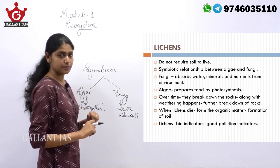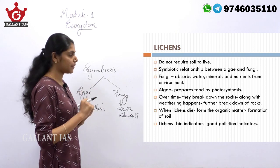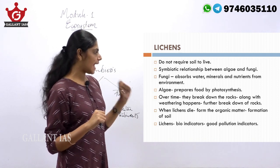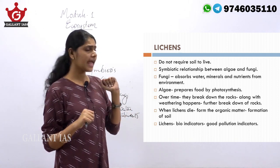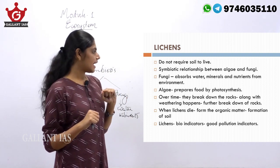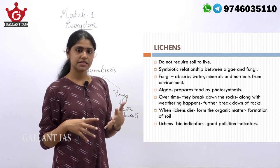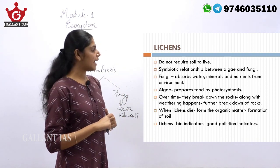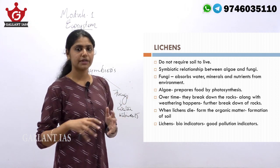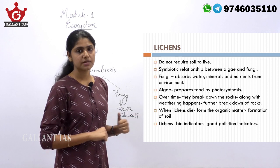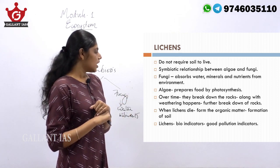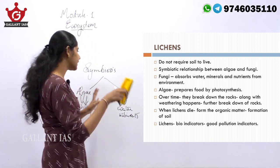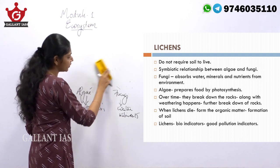This relationship is known as symbiosis. In lichens, algae and fungi live in a symbiotic relationship — algae prepare food by photosynthesis and fungi absorb water and required minerals. Over time, they break down the rocks; along with weathering, the complete breakdown of rocks leads to soil formation, and other organisms invade the surface.